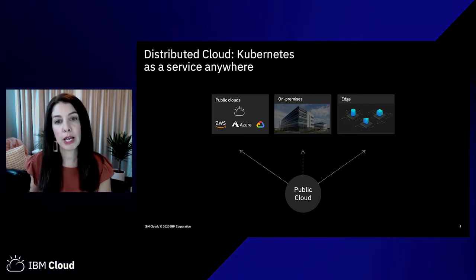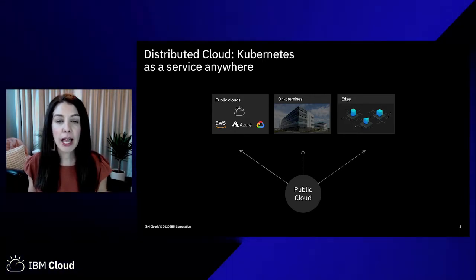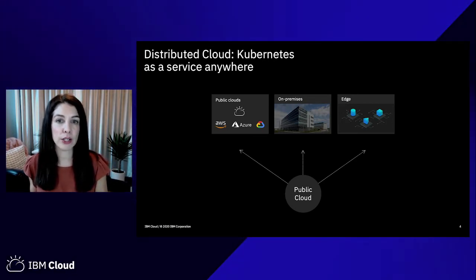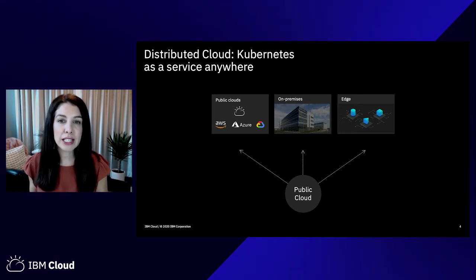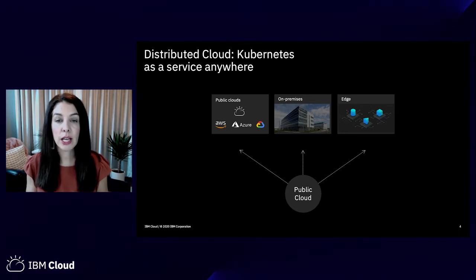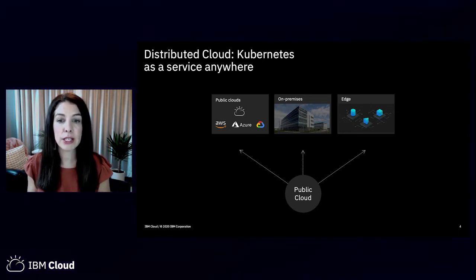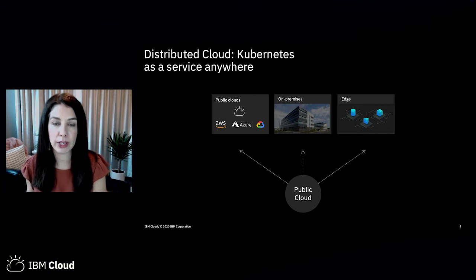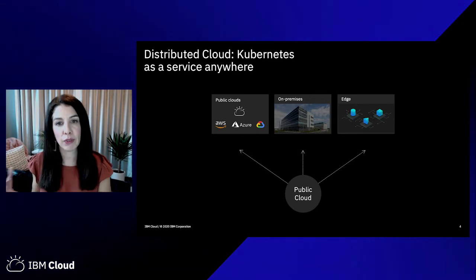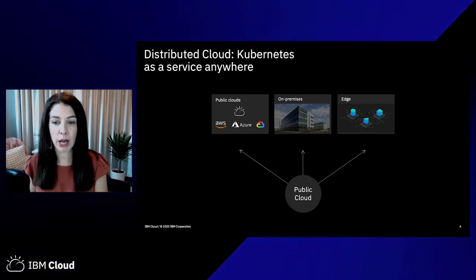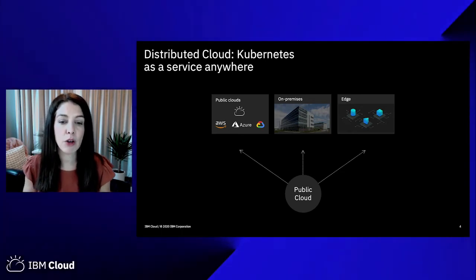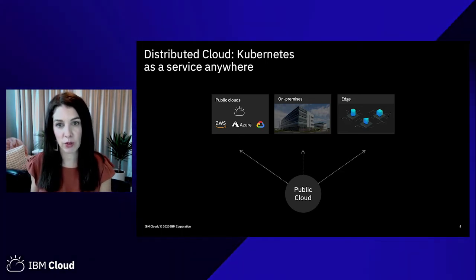Here's a scenario that's emerging to solve that problem: distributed cloud, or Kubernetes as a service anywhere. Gartner refers to it as distributed cloud; IDC calls it local cloud as a service. This is a concept where the public cloud is now extended to lots of different locations — different public cloud examples, on-prem examples, or even at the edge. The key point is that distributed cloud enables you to take advantage of a public cloud consumption model in many different locations, without needing to be an expert in running those software stacks outside of the public cloud.